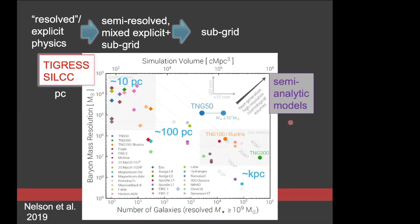There are semi-analytic models that don't resolve internal galaxy structure and can handle larger volumes with less detailed information. At the other end, simulations representing only a piece of a galaxy can achieve parsec resolution. An important distinction is between simulations that resolve a relevant physical process — for example, the full Sedov-Taylor phase of a supernova blast wave — versus intermediate simulations that resolve some processes but still use subgrid recipes for others, which I call semi-resolved, versus fully cosmological simulations where the entire range of processes must be treated with subgrid models.